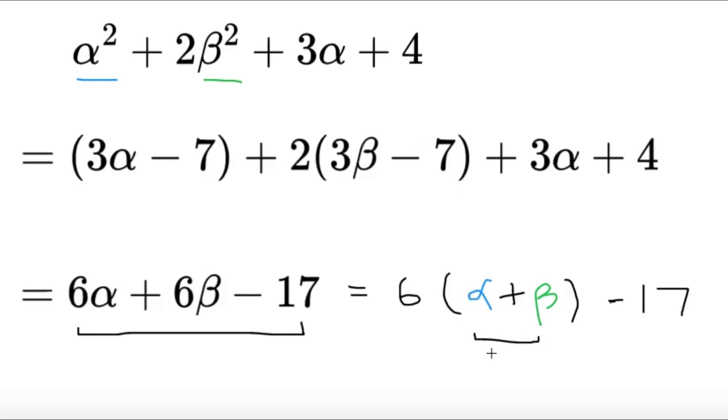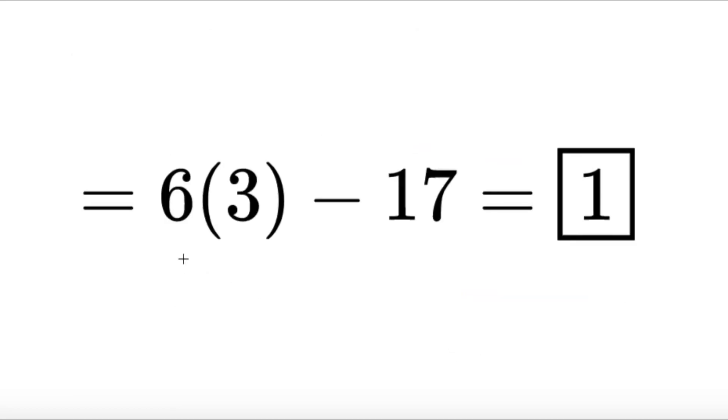So, since this part will equal to 3, all we have to do is 6 times 3, and this gives us 18 minus 17, and we'll get 1, and this will be the final answer.